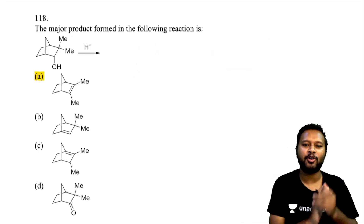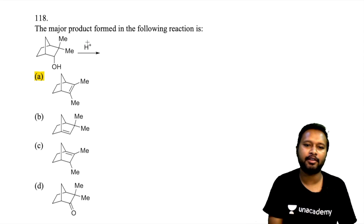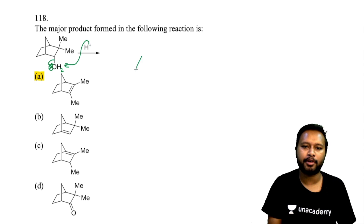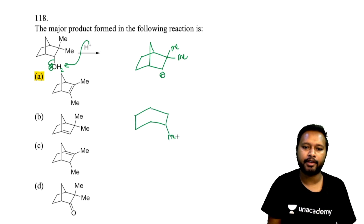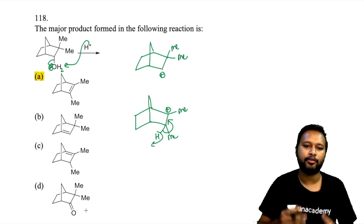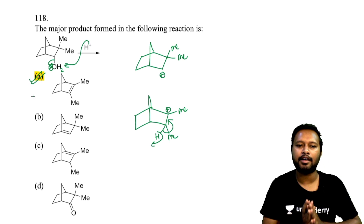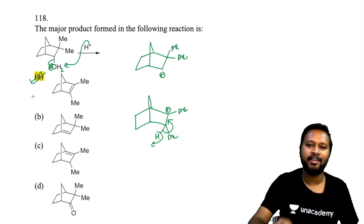Question 117: similar acid-catalyzed reaction. H₃O⁺ converts OH to OH₂⁺, which leaves to form a 2° carbocation. A 1,2-methyl shift gives a more stable 3° carbocation. The adjacent hydrogen is then eliminated, forming a double bond. Final product is option A.